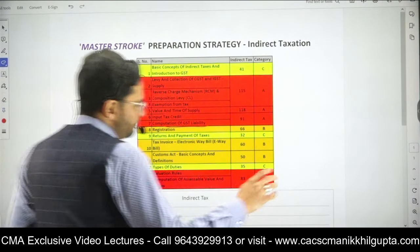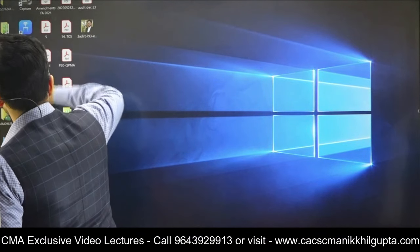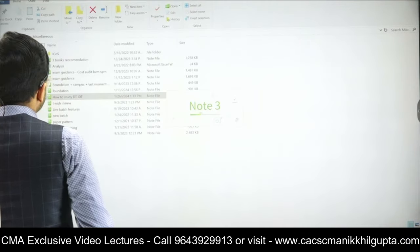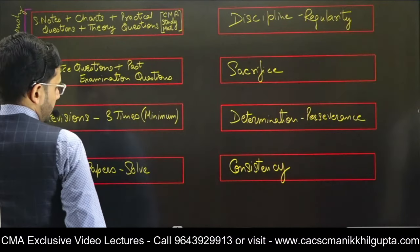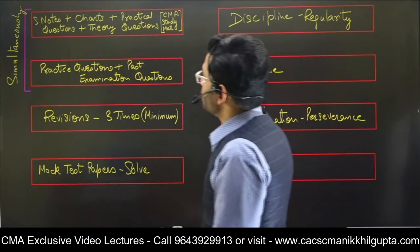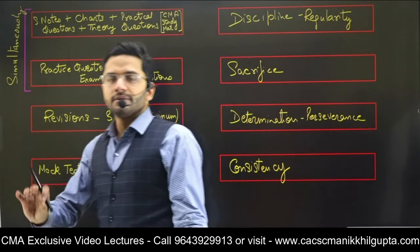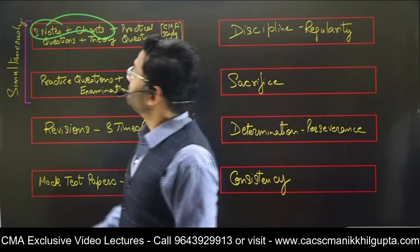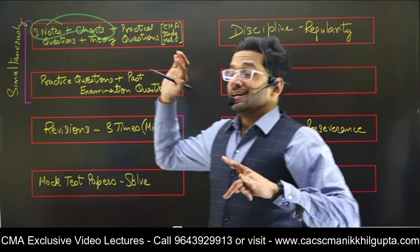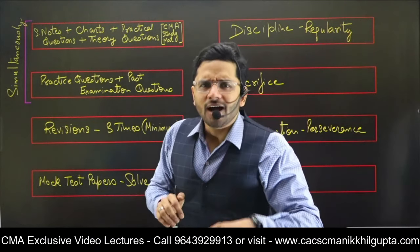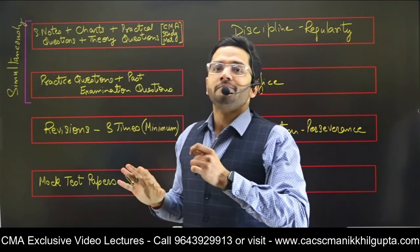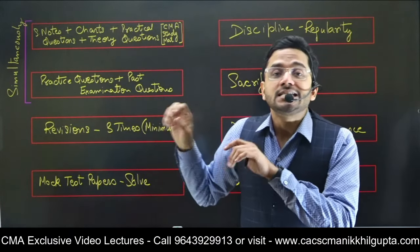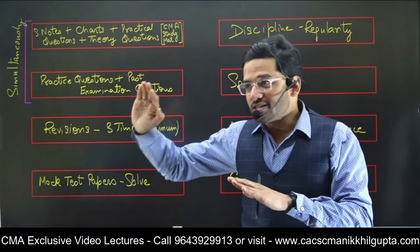Let me discuss one final thing — a sequence of events you should follow while studying. This chart will show you what to do first. The first step: whatever coaching you have taken, make all the notes and charts the teacher asked you to make during class. Be very careful here — charts or notes for C category chapters are not to be drawn by yourself. Just take a printout and study from that printout. Don't give a lot of time to category C chapters.